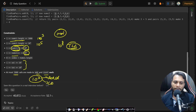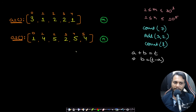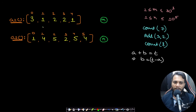Now that we understand the constraints, let's look at a better approach. The brute force is already known. A better way would be to store all items of the secondary array inside a hash map.